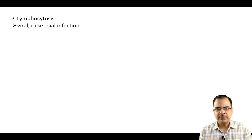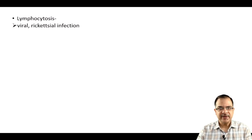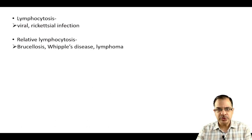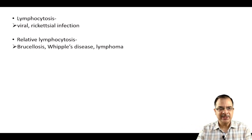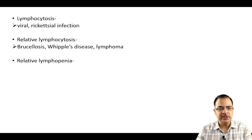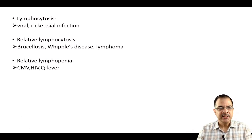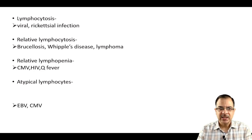Lymphocytosis is seen in viral infections — non-specific viruses, upper respiratory tract infection viruses — and rickettsial infections can also lead to lymphocytosis. Relative lymphocytosis means the total leukocyte count is normal but the percentage of lymphocytes has increased; it is seen in brucellosis, Whipple disease, and lymphomas. If lymphocyte percentage exceeds 40%, that is relative lymphocytosis. Relative lymphopenia — TLC normal but lymphocyte percentage less than 20% — is seen in cytomegalovirus, HIV infection, or Q fever.